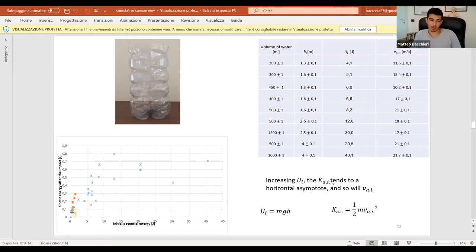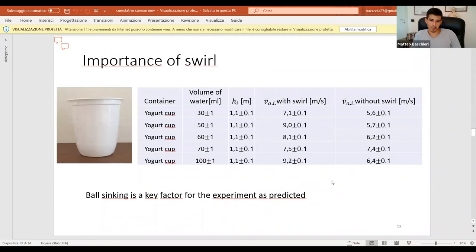And another important thing that we want to confirm from our data is the importance of the swirl. As we said, if you look at the velocity after the impact with the swirl and without the swirl, they are quite different. You can see, even with other containers that with the swirl is higher, the velocity after the impact, and so the height reached by the ball. Confirming that if the ball sinks more, then it will go higher.